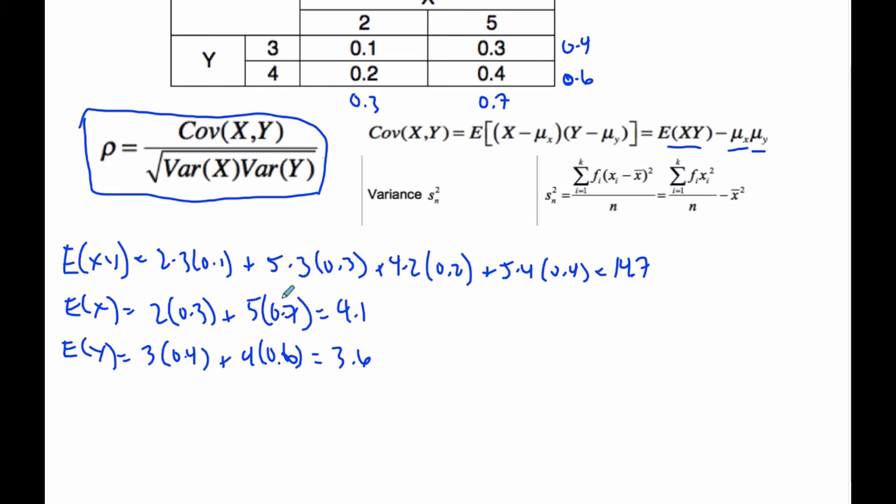If I'm going to find the variance of X, I take my X value, square it, times the probability. So, 2 squared times 0.3 plus 5 squared times 0.7.